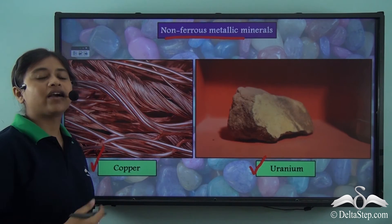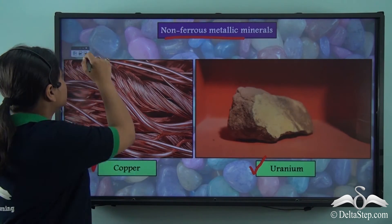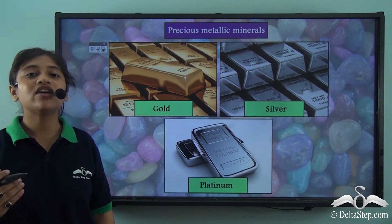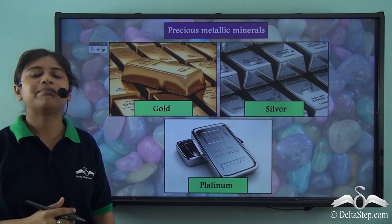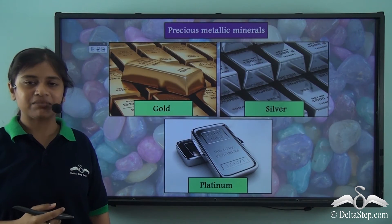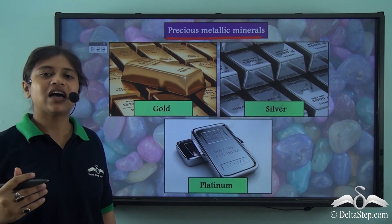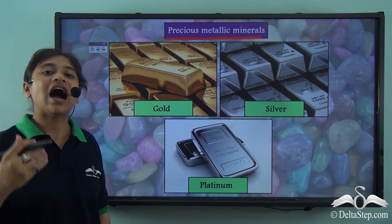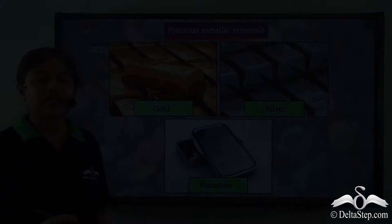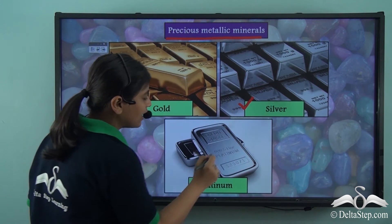This is why copper wires are very commonly used in electrical wiring. Metallic minerals can be either ferrous or non-ferrous depending on their properties. However, there is another category — precious metallic minerals. Precious metallic minerals are those which have a high economic value and are widely used across the world. Some very common precious metallic minerals are gold, silver and platinum.